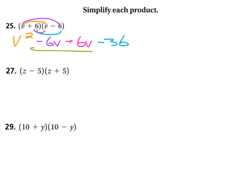And what you can see is that these two terms are exact opposites and they cancel out, leaving you with simply v squared minus 36. So what is the shortcut for this? The shortcut is this. Let me erase what we have there so it's not in your way.